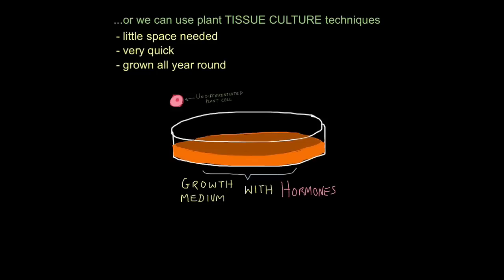So you take an undifferentiated plant cell from a meristem region. And when given a suitable growth medium, those cells will rapidly divide to produce cloned cells. And then those cells will develop into a plant. This technique is very efficient, very convenient, because little space is needed, as you can see. It's very quick, and you can grow plants all year round. And because you've chosen those cells from a plant which has desirable features, all the clones will have those desirable features too.